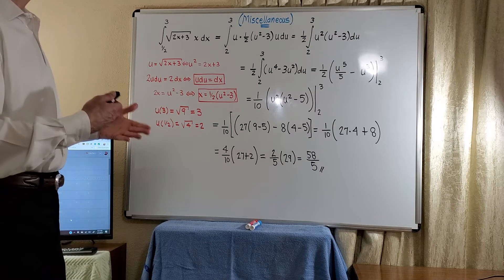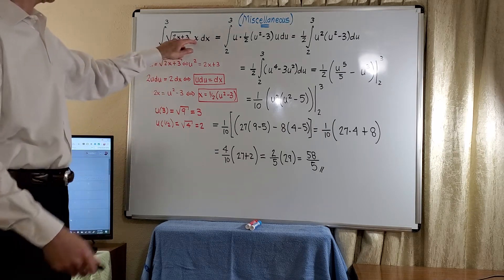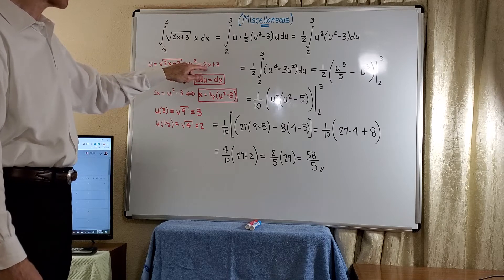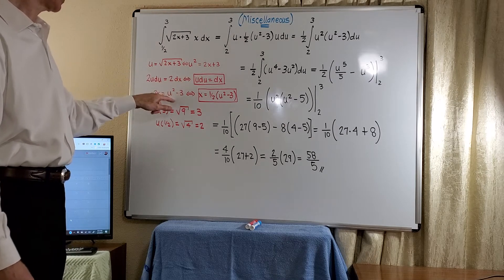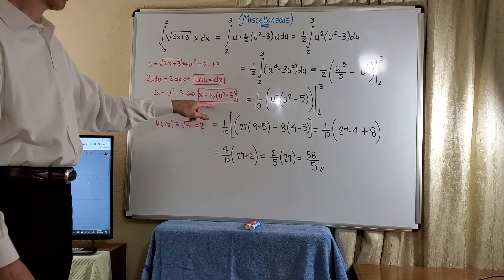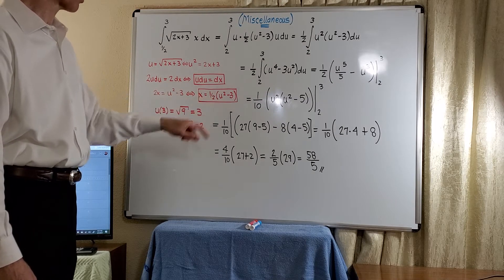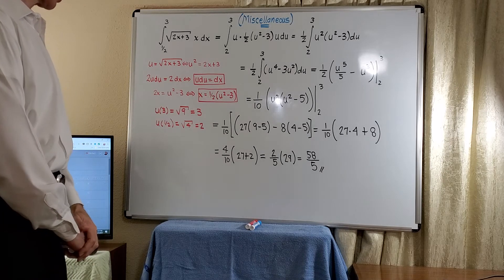So now the only thing that we have left, we've got the limits and the x. So here we can solve for 2x, 2x will just be u squared minus 3. And then of course multiplication by 1/2, we have x is equal to 1/2 times the quantity u squared minus 3.